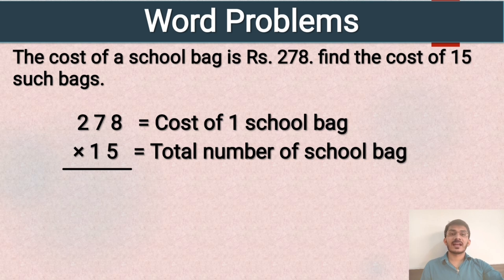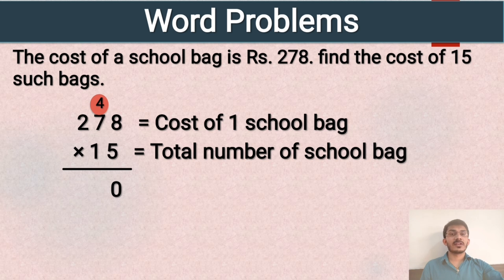5 times 8 is 40, write 0 at the ones place and carry 4. 5 times 7 is 35, plus 4 is 39, carry 3. 5 times 2 is 10, plus 3 is 13.